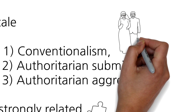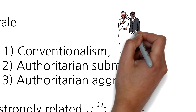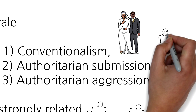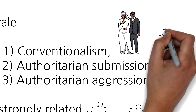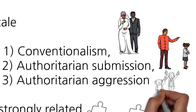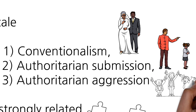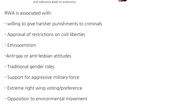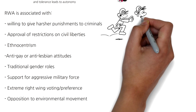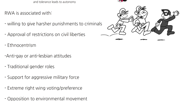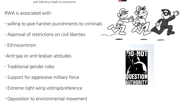For conventionalism: 'Women should have to promise to obey their husbands when they get married.' For authoritarian submission: 'Obedience and respect for authority are the most important virtues children should learn.' For authoritarian aggression: 'What our country really needs is a strong, determined leader who will crush evil and take us back to our true path.' Studies show that RWA is associated with willingness to give harsher punishments to criminals and approval of restrictions on civil liberties.